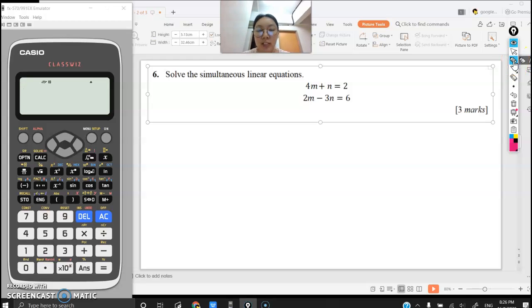Question number 6. Solve the simultaneous linear equations. Solve means I need to find out the variable. What is the variable here?